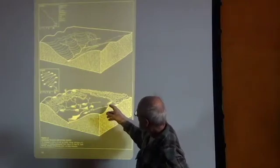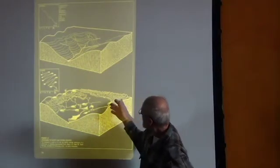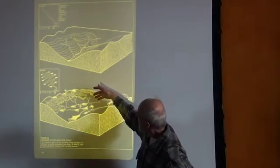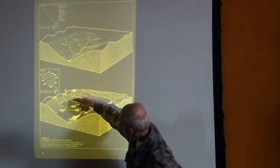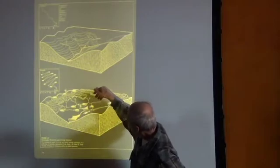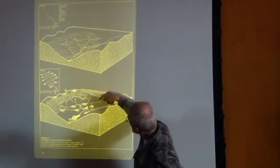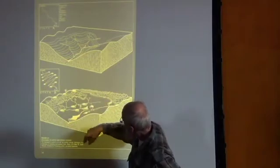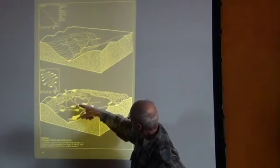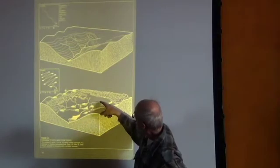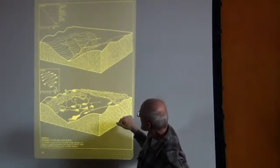If you keyline the system — and this is going to be complicated, I'll have to come back to it — the water that falls onto the landscape is caught in diversion channels. First of all, you keyline plow the landscape so that water infiltrates really well into the system. But when there is runoff, it's captured in diversion channels and put into a series of ponds that are usually linked.